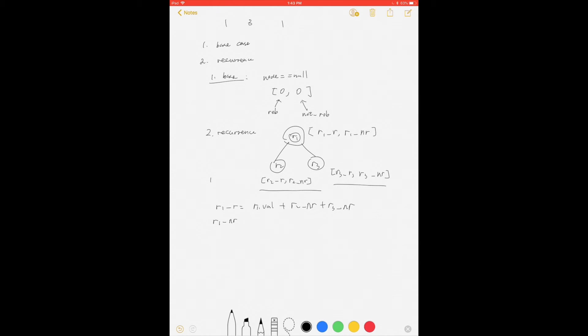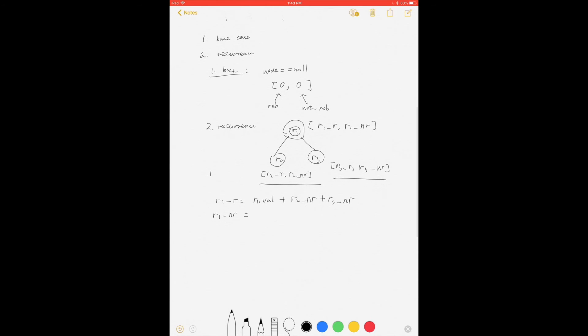For r1_nr, if we do not rob r1, then we don't care whether we rob r2 or r3. We just want to find the maximum value between the combinations. So it should equal max(r2_nr, r2_r) + max(r3_r, r3_nr).